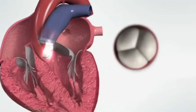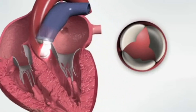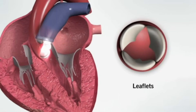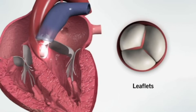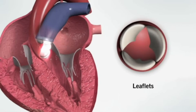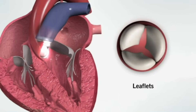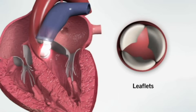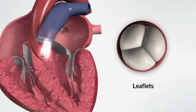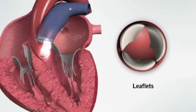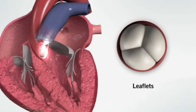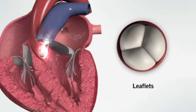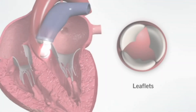Each valve is made up of two or three strong flaps of tissue called leaflets. The leaflets open to allow blood to flow through the valve and close to prevent blood from flowing back into the heart chamber. The opening and closing of the heart's four valves is controlled by blood pressure changes within each heart chamber.